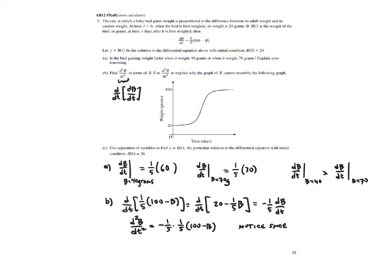...is going to be negative one-fifth times one-fifth times 100 minus current weight. Now notice, since b is greater than zero and less than 100, the second derivative will always be less than zero under the given conditions. So notice also that the graph above...